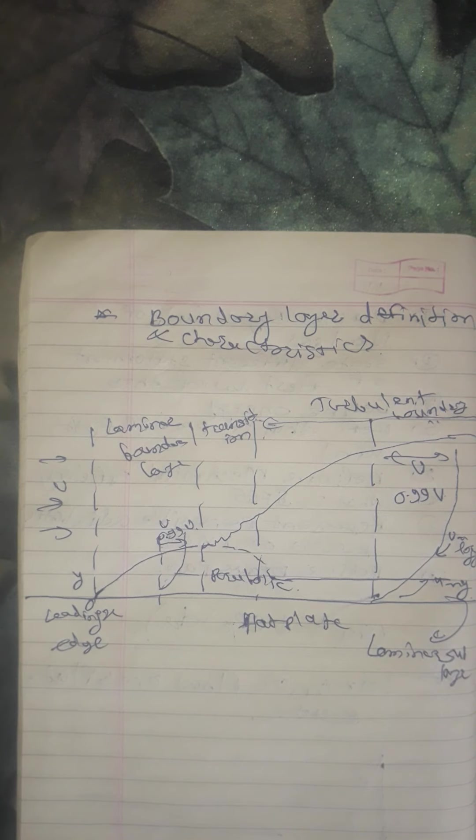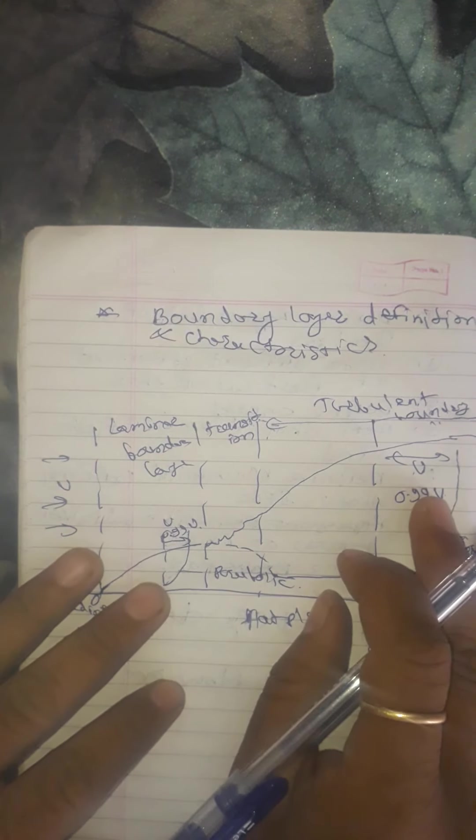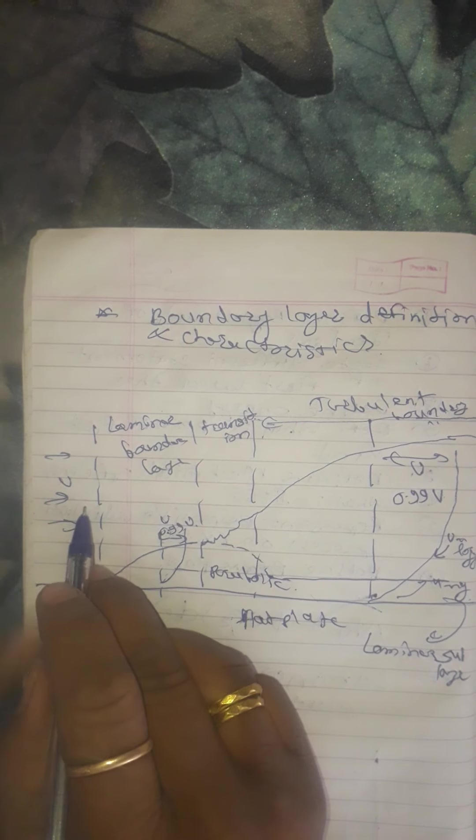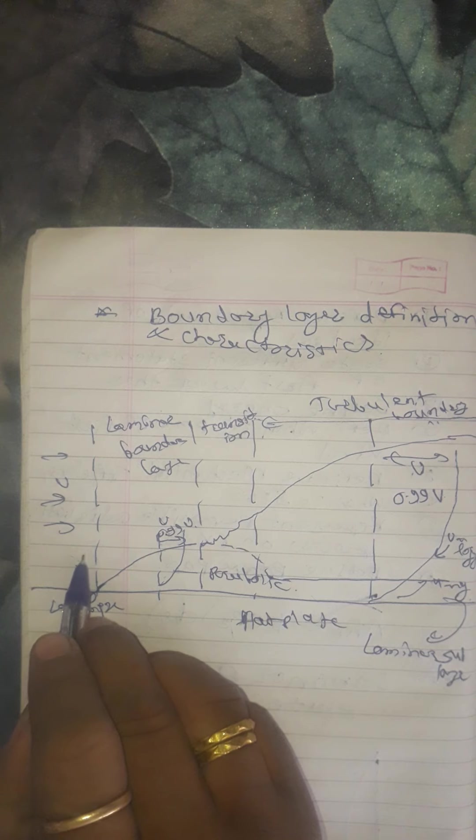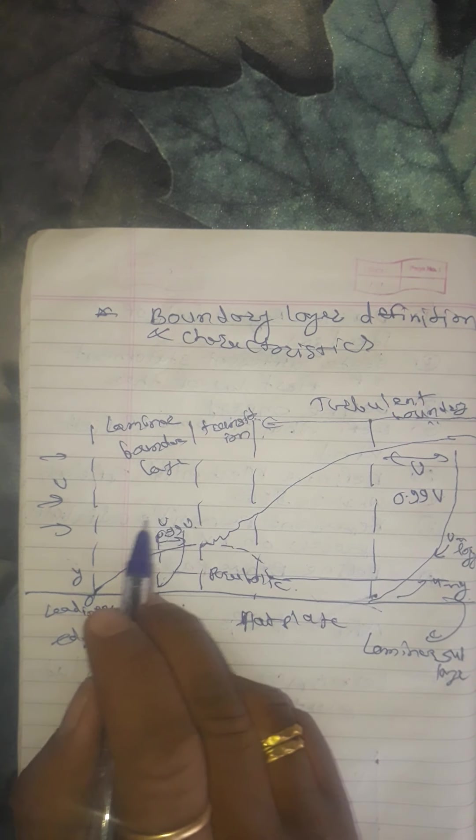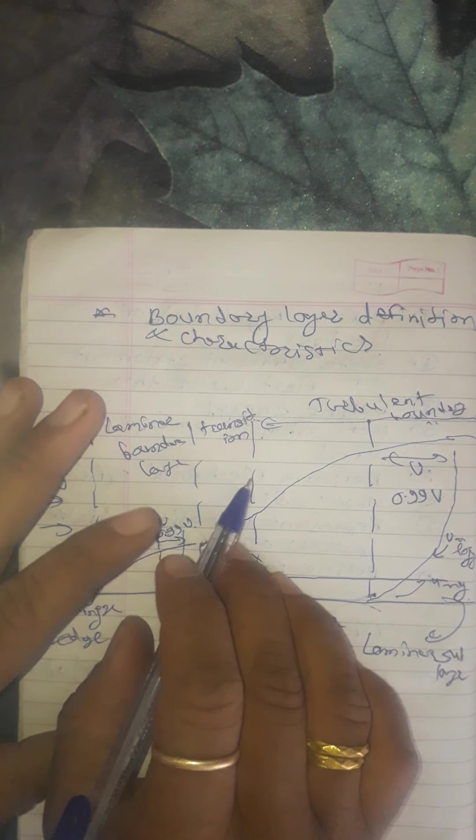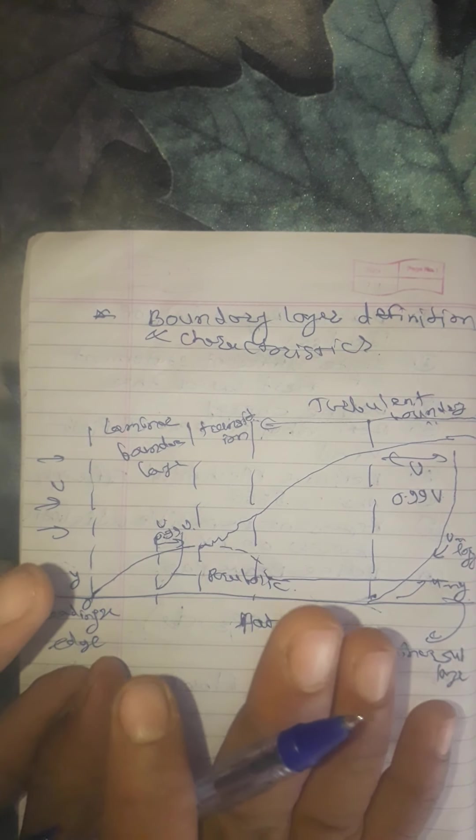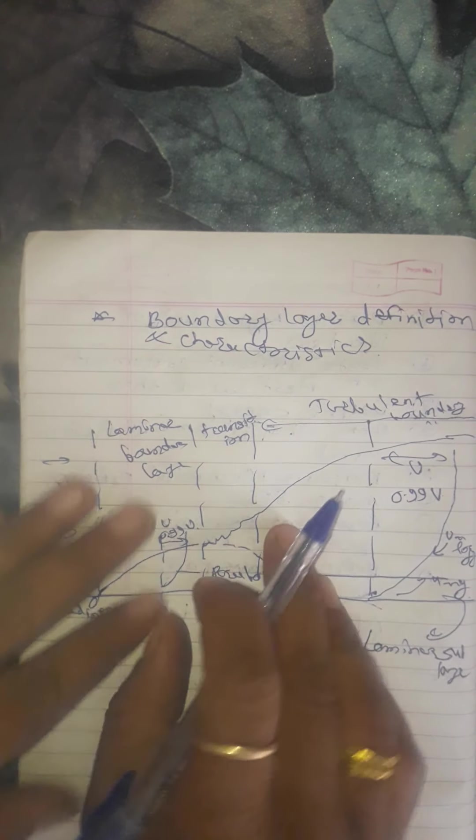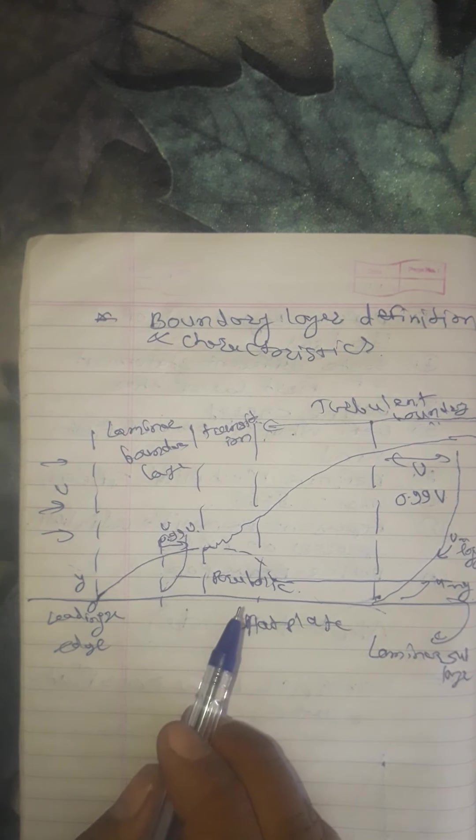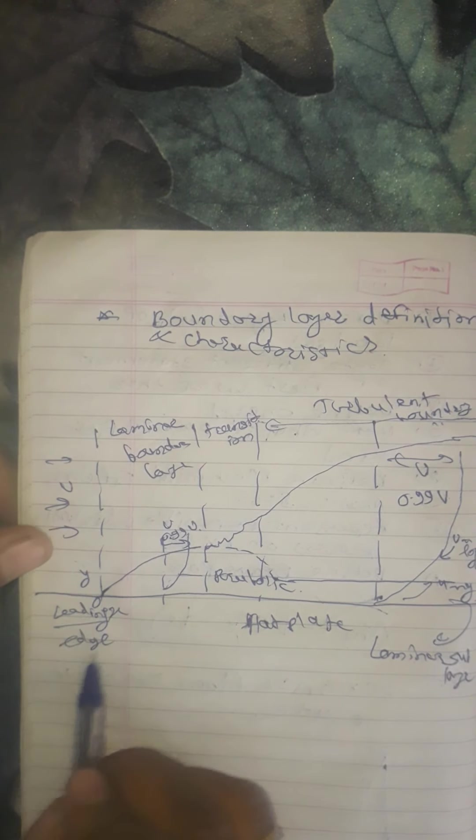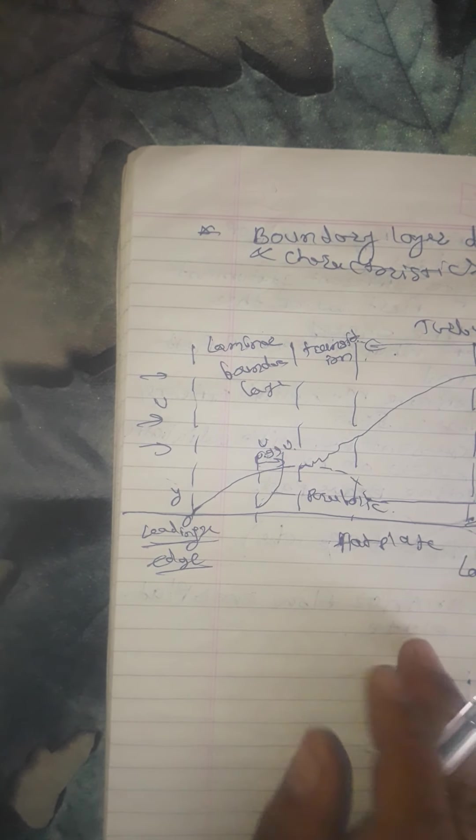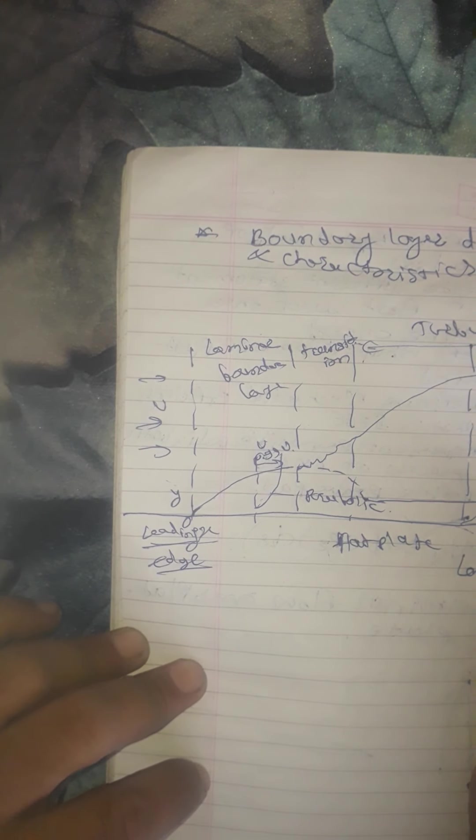So consider boundary layer is formed on a flat plate, this is flat plate, boundary layer is formed, kept parallel to flow of fluid, velocity is u. Though the growth of boundary layer depends upon the body shape, flow over a flat plate aligned in the direction of flow is considered, since most of the flow surfaces can be approximated as a flat plate. The edge facing the direction of flow is called as leading edge. This is leading edge facing the direction of flow. The rear edge is called as trailing edge. This is trailing edge.